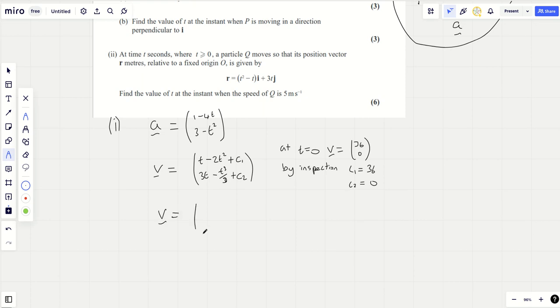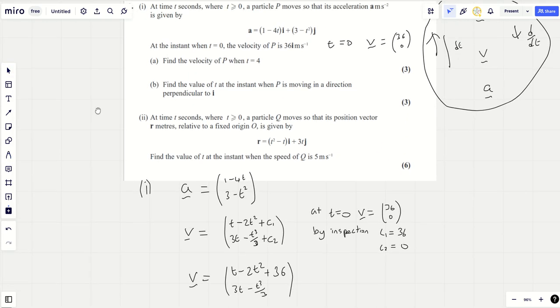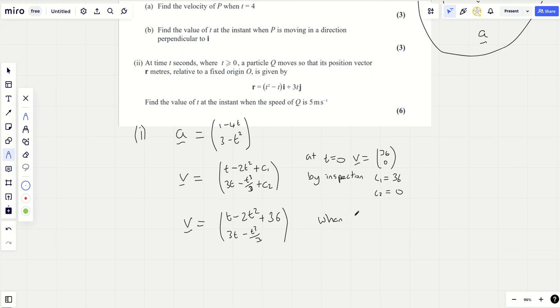So now we know that the velocity vector is in fact T minus 2T squared plus 36, and 3T minus T cubed over 3. Now we need to find the velocity when T equals 4. And we can see that the velocity vector then is going to be, 4 squared is 16, that's 32. So we've got 4 minus 32, which is minus 28, and then we're adding 36, which is 8. And here we've got 4 times 3 is 12, 12 minus 64 over 3.